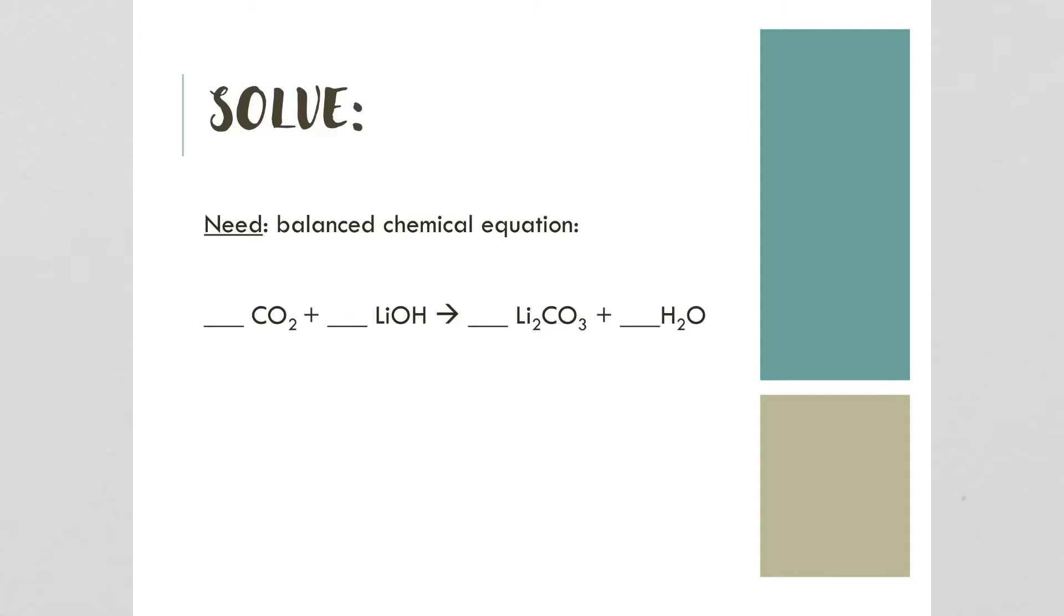The first thing that we'll need is the balanced chemical equation. If we look at this equation, we have one carbon on the reactant side and one on the product side, so that's balanced. We have three oxygens on the reactant side and four on the product side.